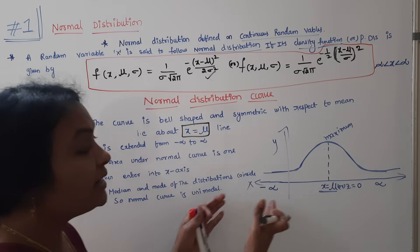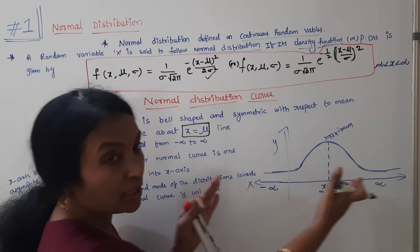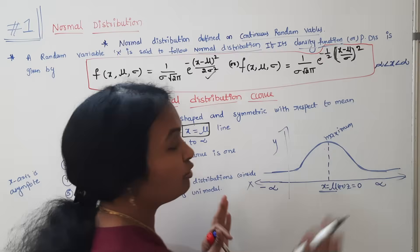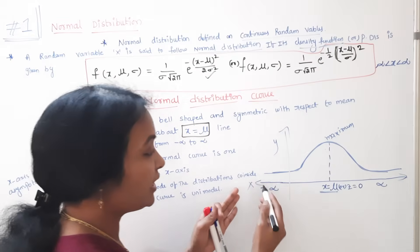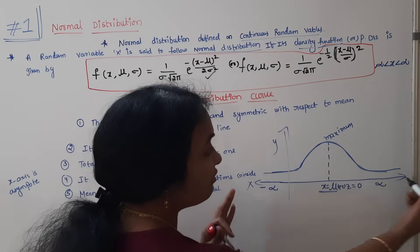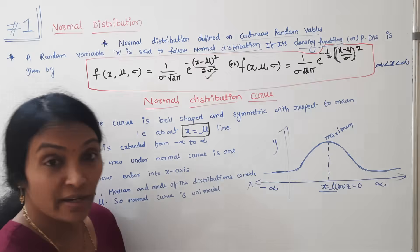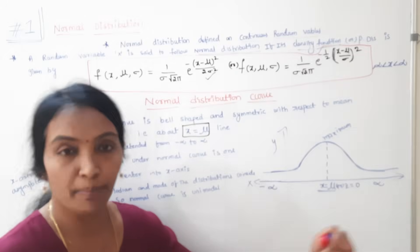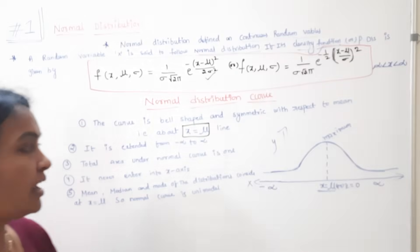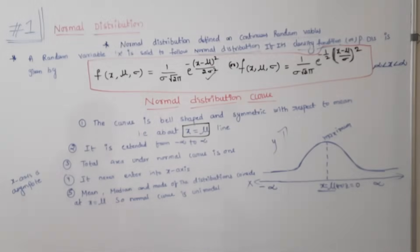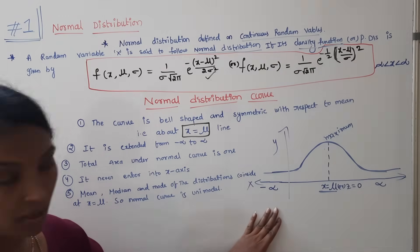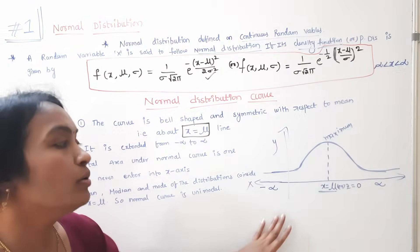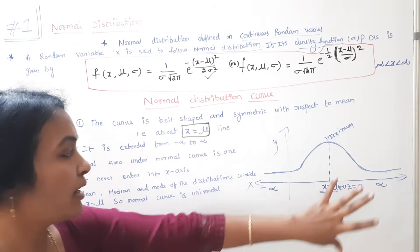The bell curve extends from minus infinity to plus infinity along the x-axis. That is one condition of the normal distribution. Another condition is that the total area under the curve is equal to 1.